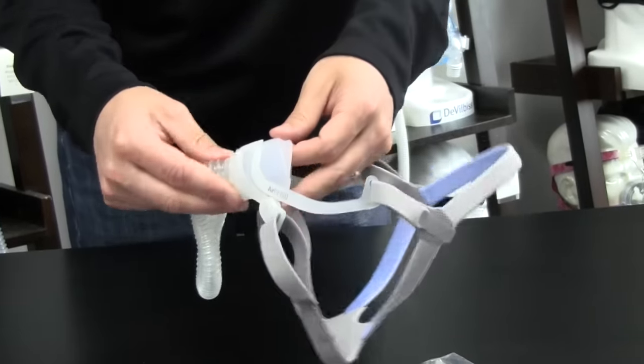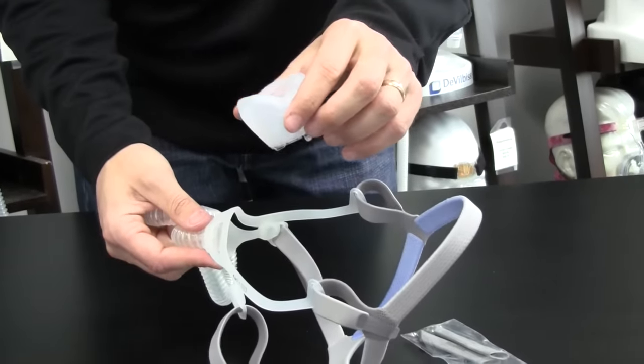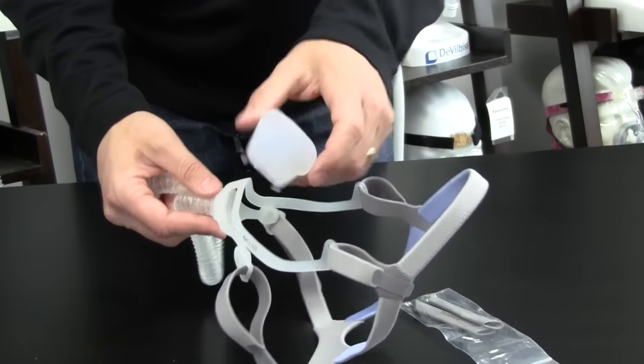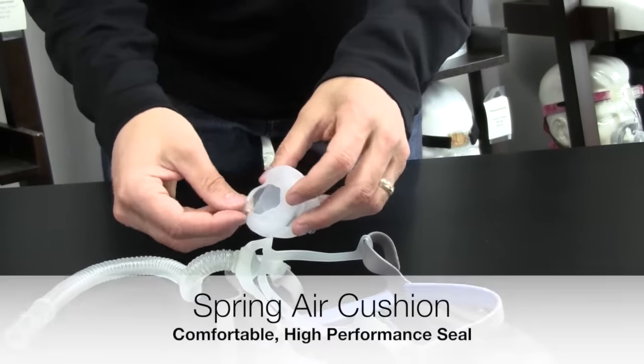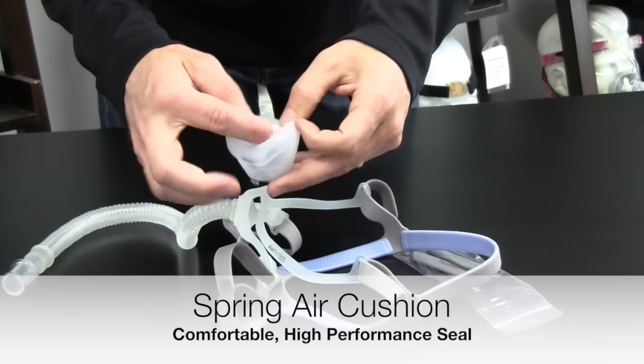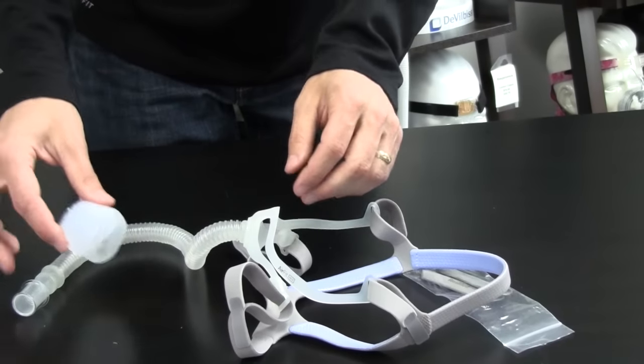The cushion is available in two different sizes. Easily replaceable, and you can take it apart very easily to clean. Just run some warm soapy water through here. It's their spring air cushion. It's got a little cushion on the outside and then another one inside. So when this inflates, it really does create a very good seal around your nose.